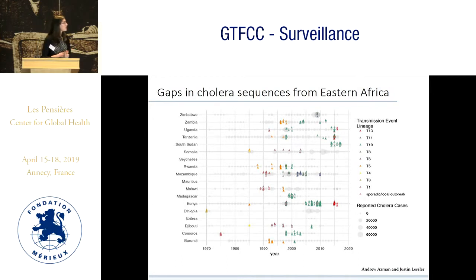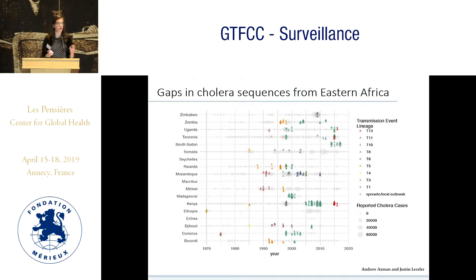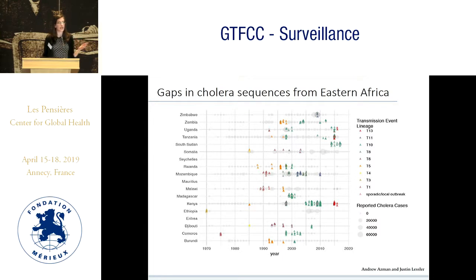This is a figure that Andrew put together, taking all of the published cholera sequences — colored by the lineages identified in that paper. The gray dots represent WHO reports of case counts in each country. I'm showing a snapshot of countries in Eastern Africa, and what you can see is there are definitely times and places where there were cases reported where we don't have genome sequencing yet. So something we're trying to do is fill in those gaps.